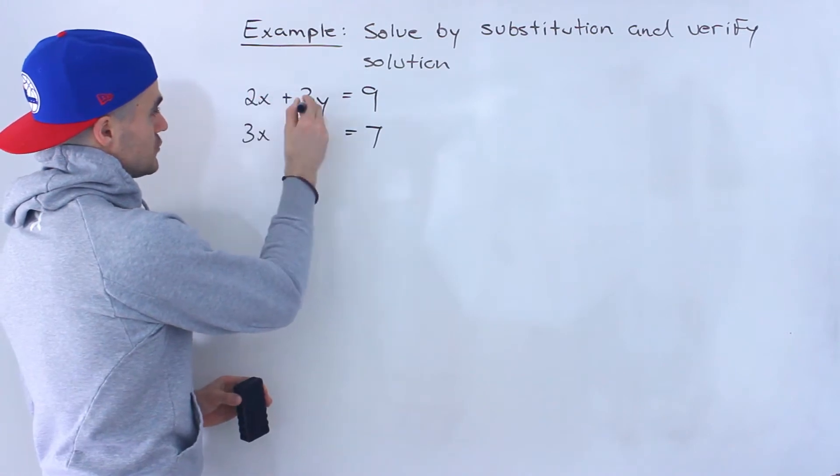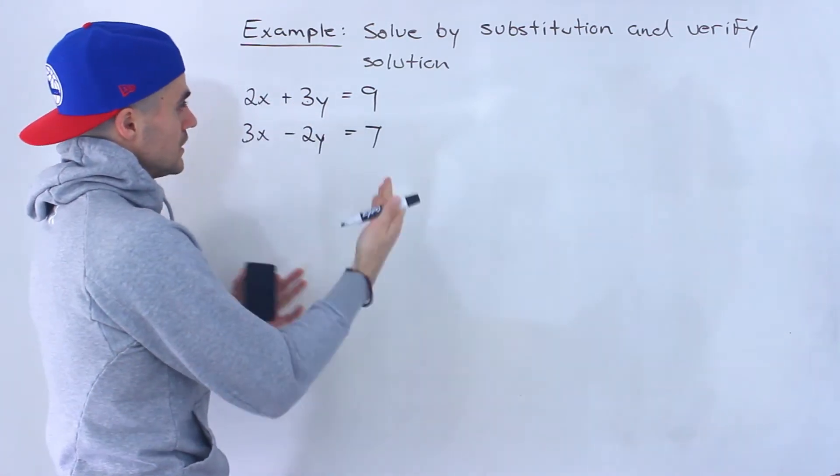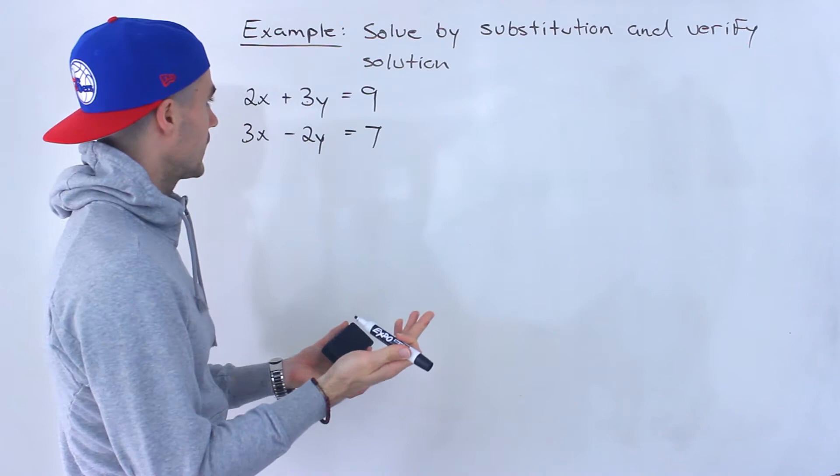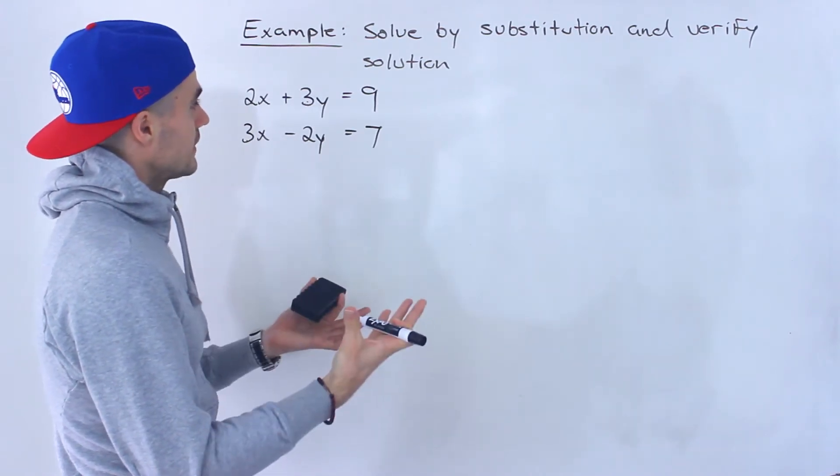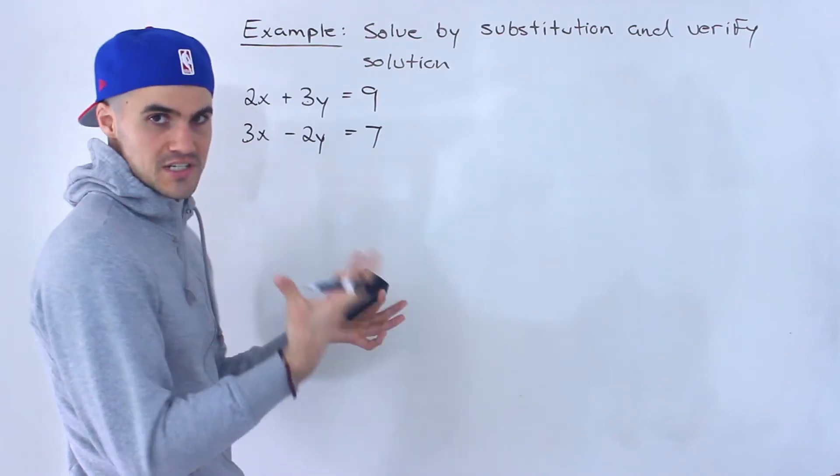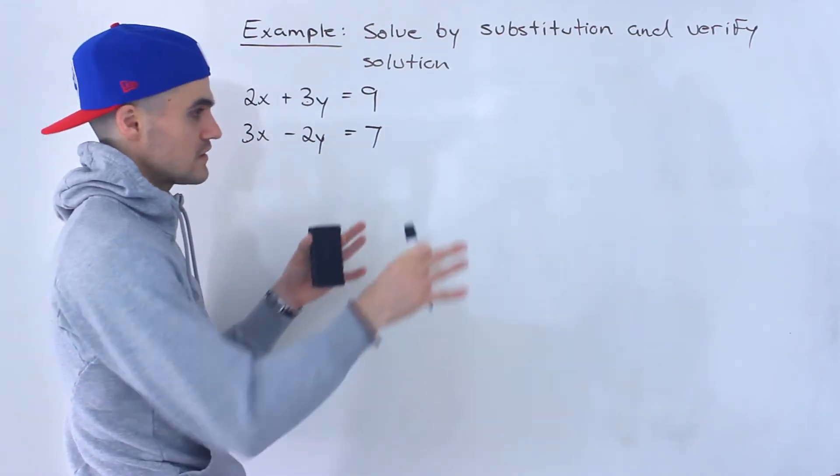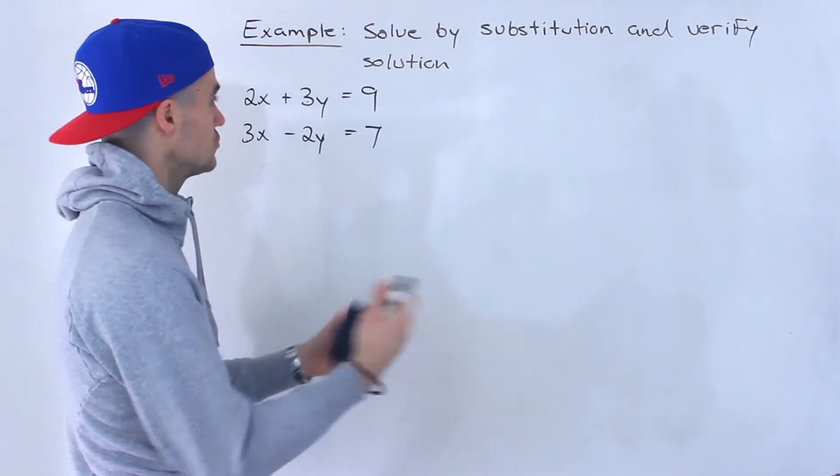And notice that here we have a 2, 3, 3, and 2. So nothing by itself that we can isolate for. So we're going to have to end up isolating for some kind of variable. And it actually doesn't matter which one you isolate for, the final solution that you get should be the same.